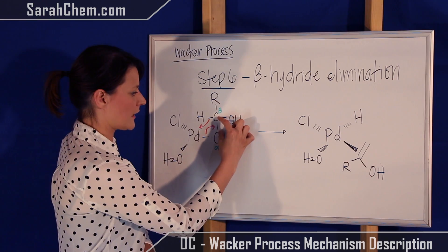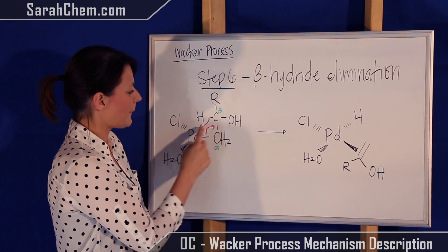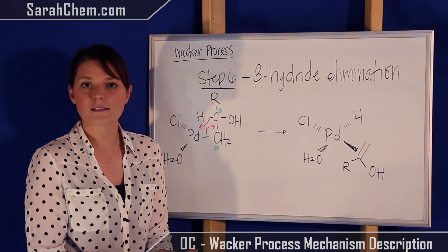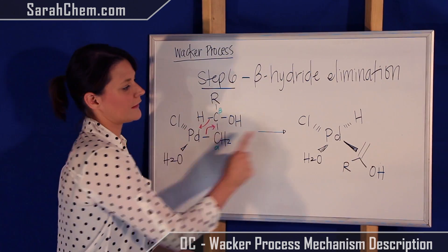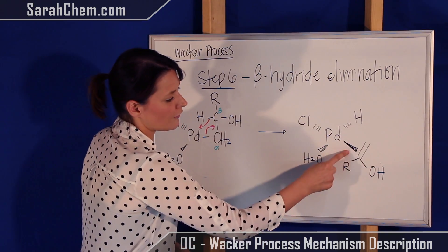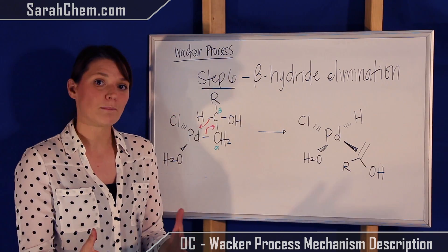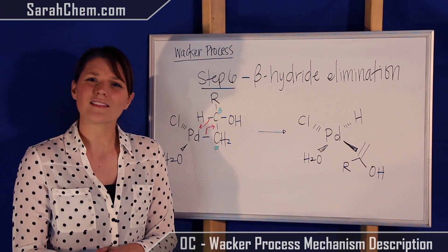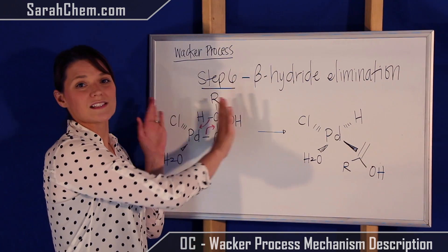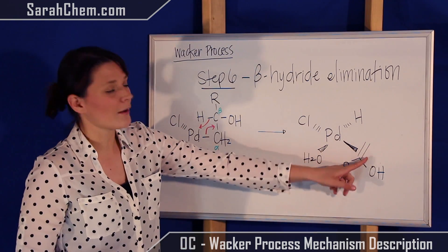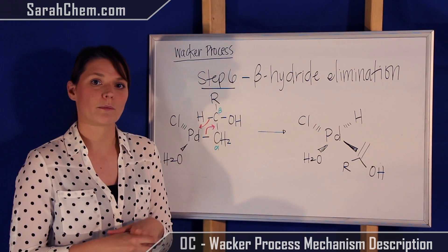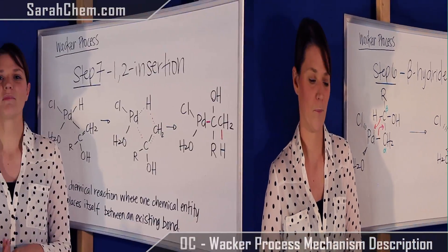The C–H bond shifts to make a double bond between the two carbons, and the hydride is eliminated to form a bond with the palladium. The double bond is shown in the middle of the wedge because the pi bond is coordinating. This can be confusing because typically in a mechanism when a bond breaks this way we separate the components, but since the pi bond can coordinate, the palladium is still shown attached to both carbon positions.